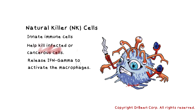It helps kill infected or cancerous cells. It is a very important cell — if it finds a cell that is virally infected or developing cancer, natural killer cells' job is to identify such cells and kill them. It also releases interferon gamma that activates macrophages, which are another cell of the innate arm, also working to clear out infected cells, infections, bacteria, and viruses, and take part in inflammation.